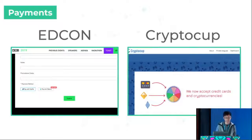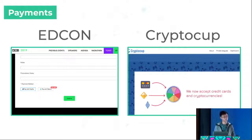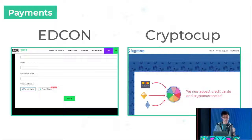The second use case is for payments. For example, let's say you are building an e-commerce website and you want people to be able to purchase your products using cryptocurrencies. We have integrated with a few different projects — for example, AdCon, where you could purchase conference tickets using any cryptocurrency that you hold. We are currently specific to Ethereum but have slowly expanded to EOS as well. The second example is CryptoCup, a decentralized application that is also able to accept payments in any cryptocurrency.